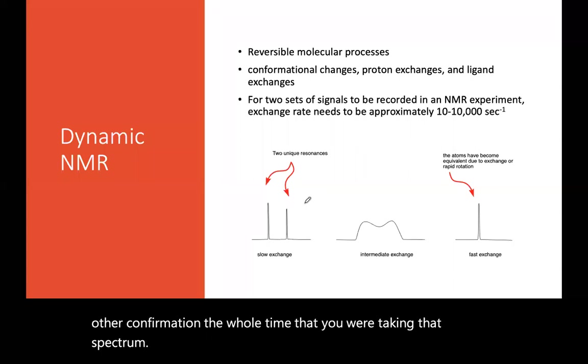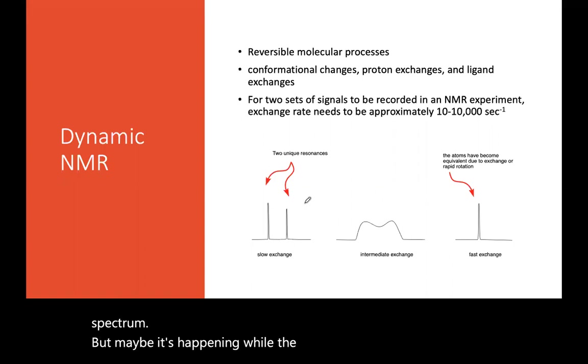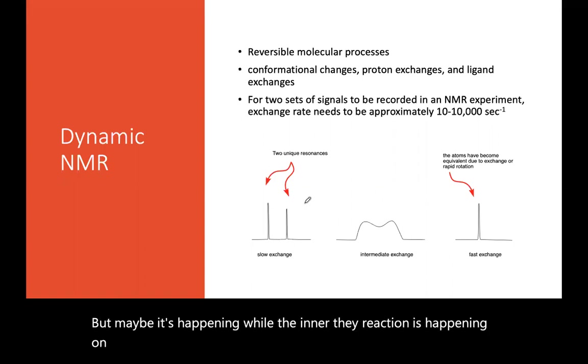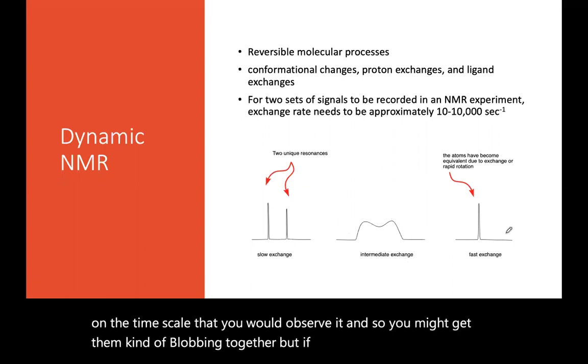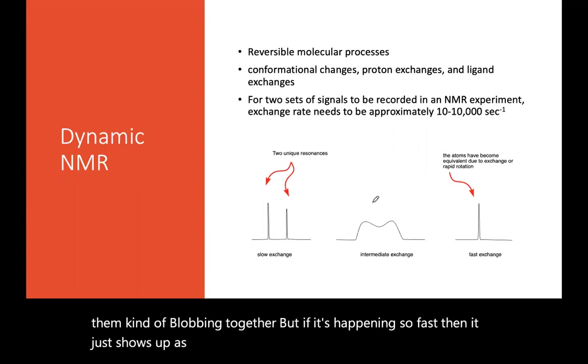But maybe it's happening while the reaction is happening on the time scale that you would observe it, and so you might get them kind of blobbing together. But if it's happening so fast, then it just shows up as one peak that's kind of averaged.